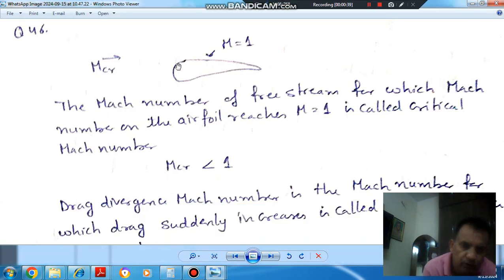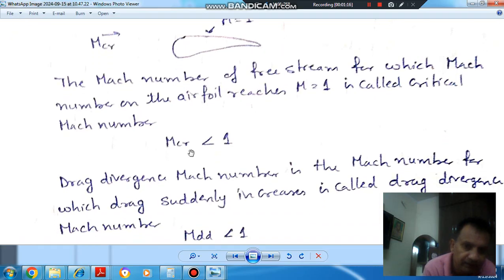This is your airfoil and this is the Mach number of the free stream for which the Mach number on the airfoil reaches M equals 1. If the free stream Mach number MCR is when the Mach number on the airfoil reaches up to 1, then this is called the critical Mach number. So the Mach number increases on the airfoil. MCR is less than 1. This is your critical Mach number and it is less than 1.